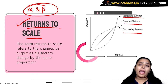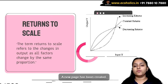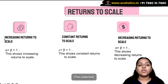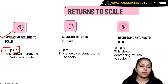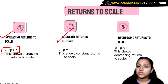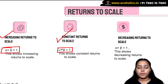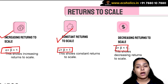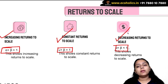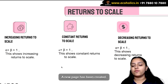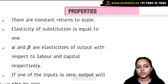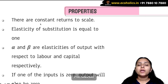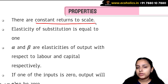How do alpha and beta tell us about returns to scale? If alpha + beta > 1, we have increasing returns to scale. If alpha + beta = 1, we have constant returns to scale. And when alpha + beta < 1, we get decreasing returns to scale. So the sum of alpha and beta helps us know about this very important concept in the Cobb-Douglas production function. Generally, in Cobb-Douglas production function, we take constant returns to scale.